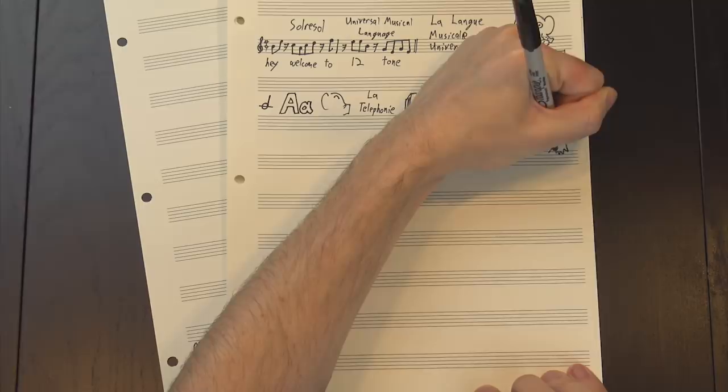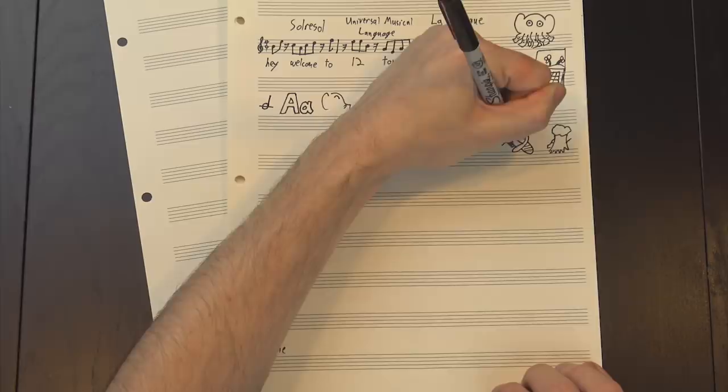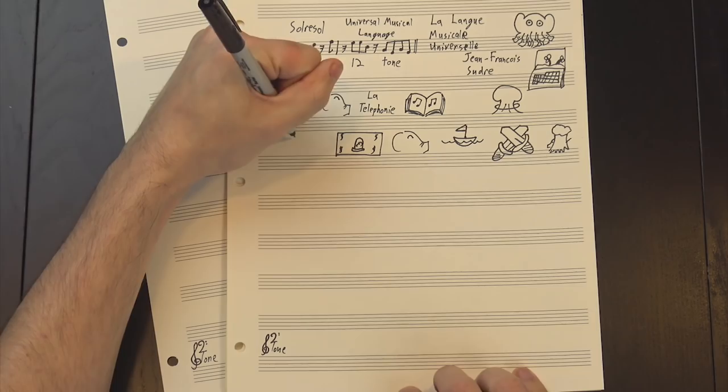Soudre tried to sell his system to the French army, and later the navy, but despite early interest, they never actually paid him for it. He even built a series of properly tuned canons in order to increase the volume of his transmissions, but to no avail. Still, though, he wasn't about to give up on his dream.